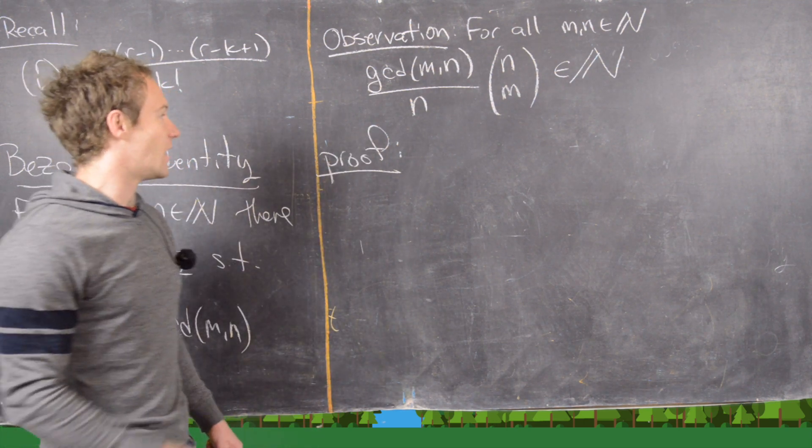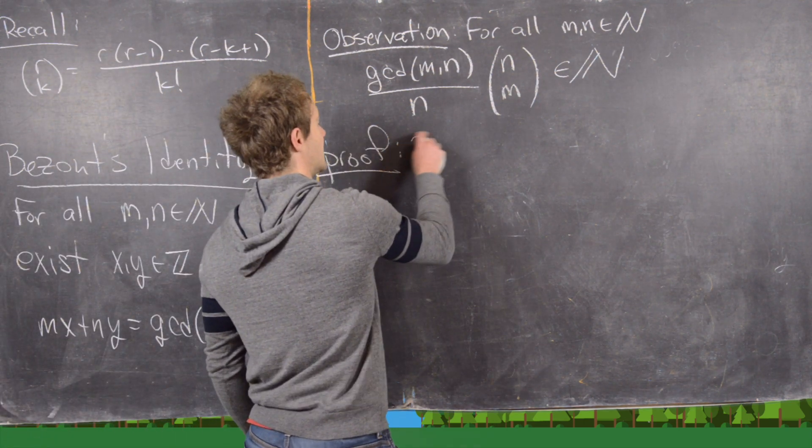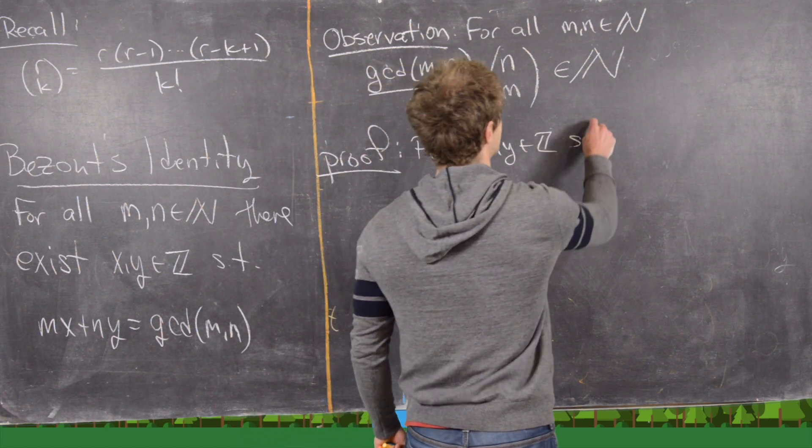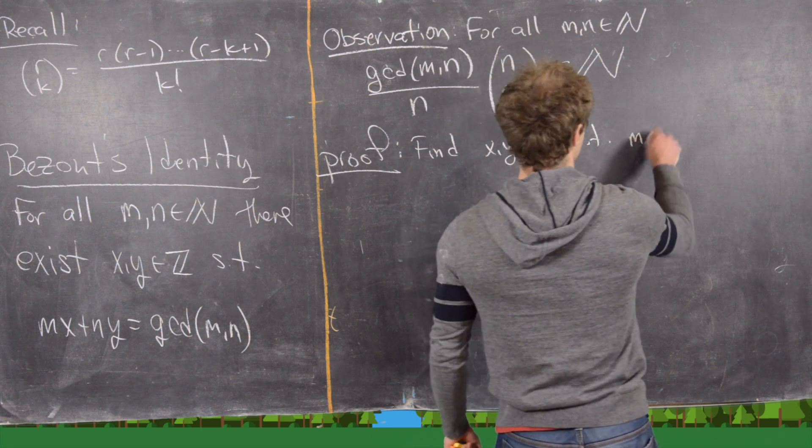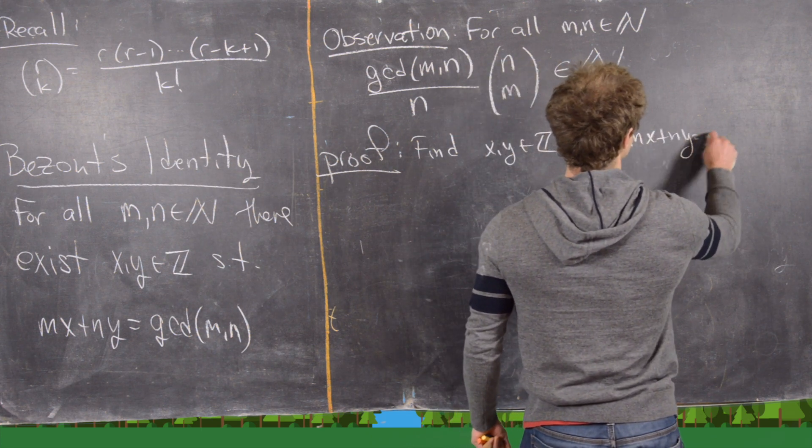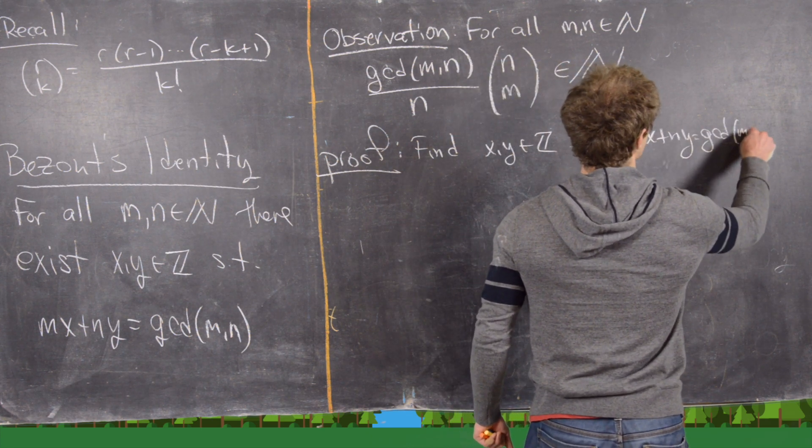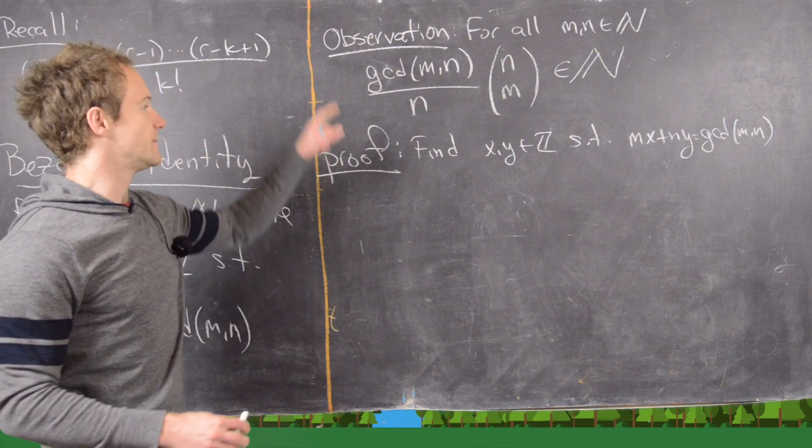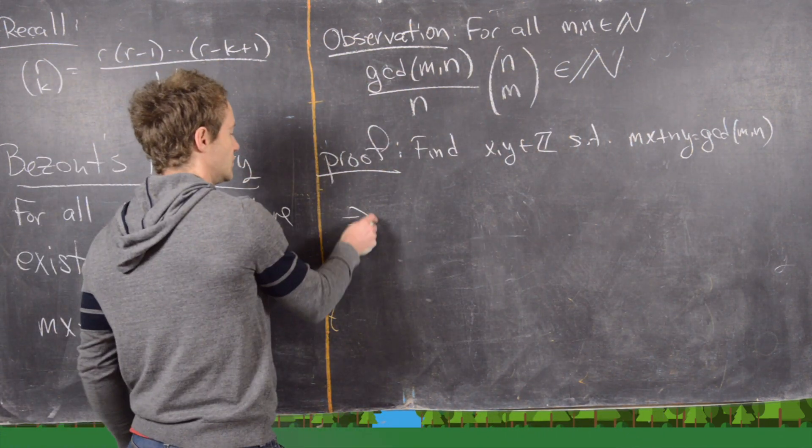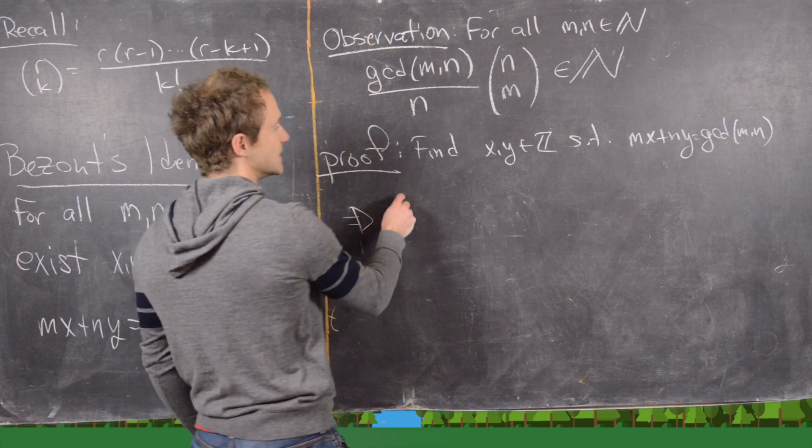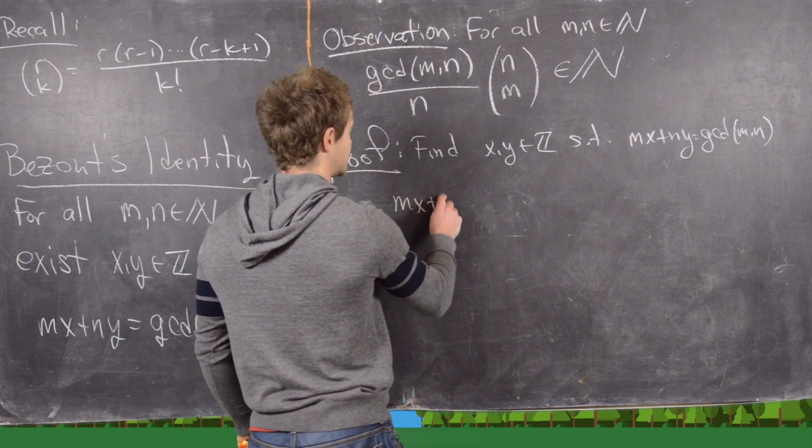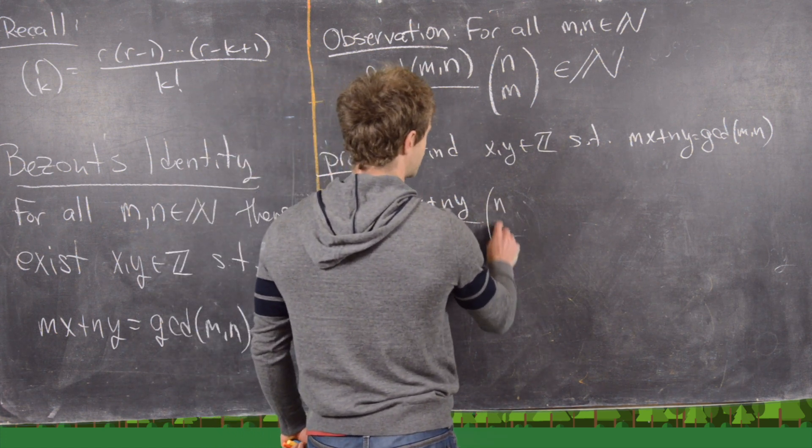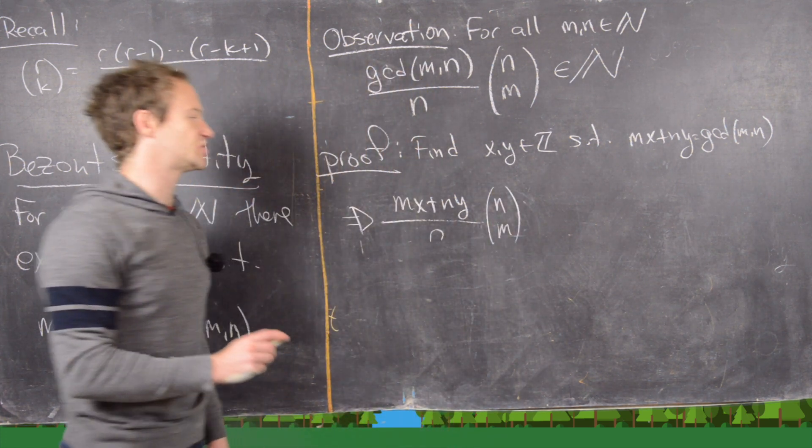So let's go ahead and find x and y in the integers such that mx plus ny equals the GCD of m and n. So we're going to use this identity. Okay, now let's put that into our expression. So we'll have mx plus ny over n times this binomial coefficient n choose m.